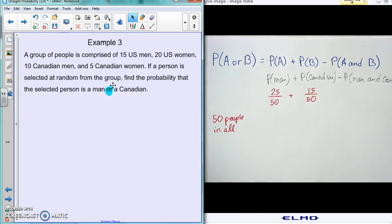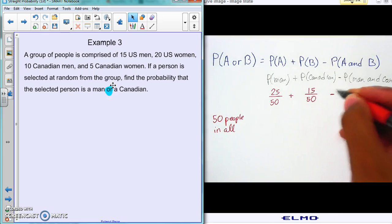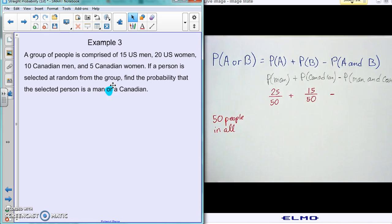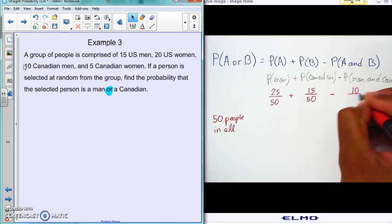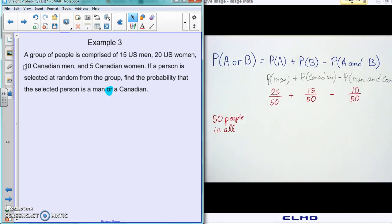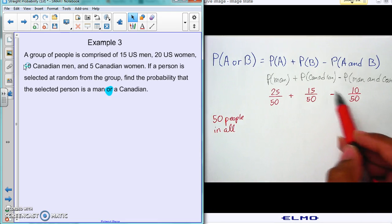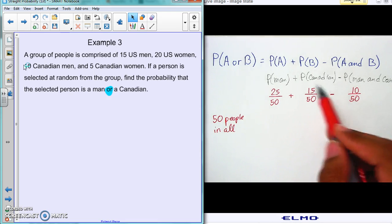Now how many are men that are Canadian? How many men are Canadian? So there's 10 Canadian men, so they're both a man and they're Canadian. So there are 10 of those, so we do 10 out of 50. That's man and Canadian, there's only 10 of them.